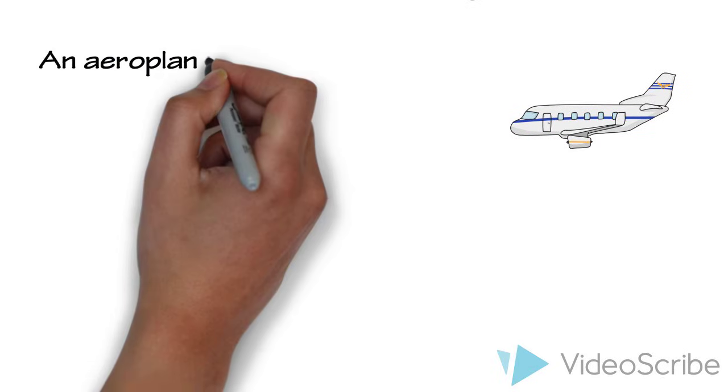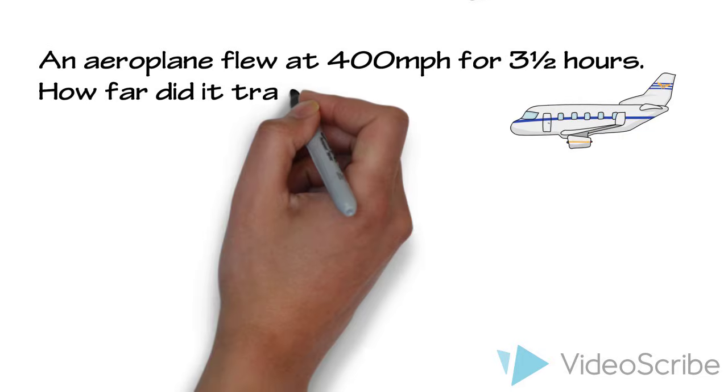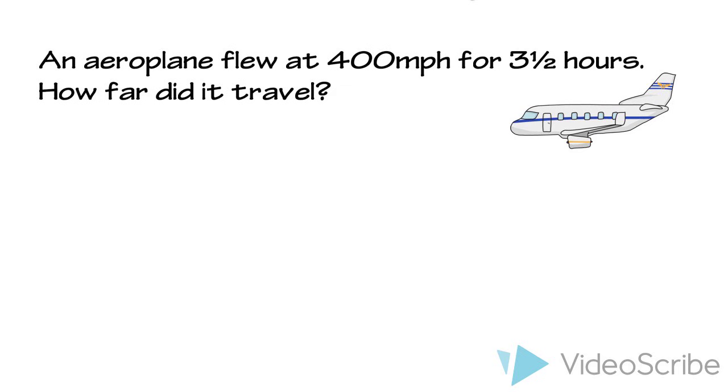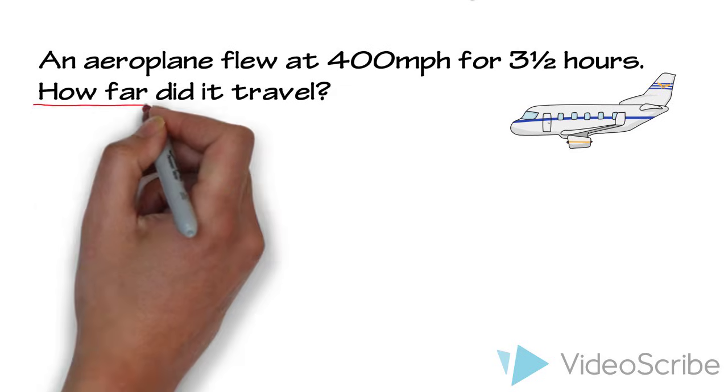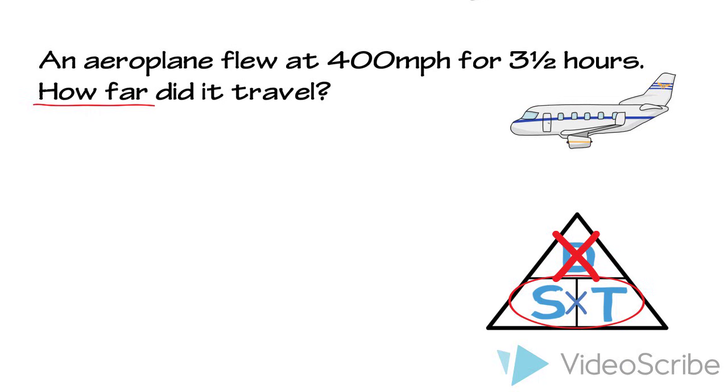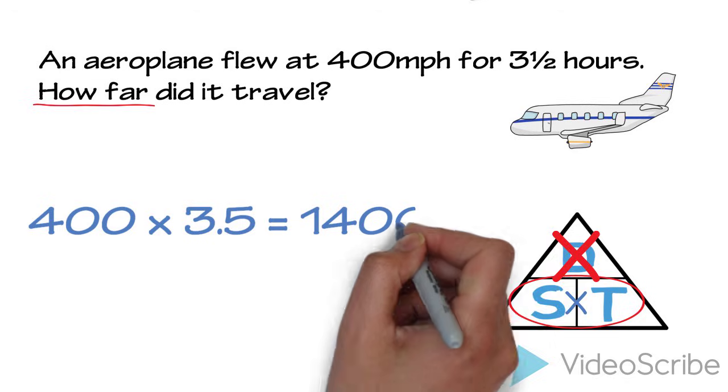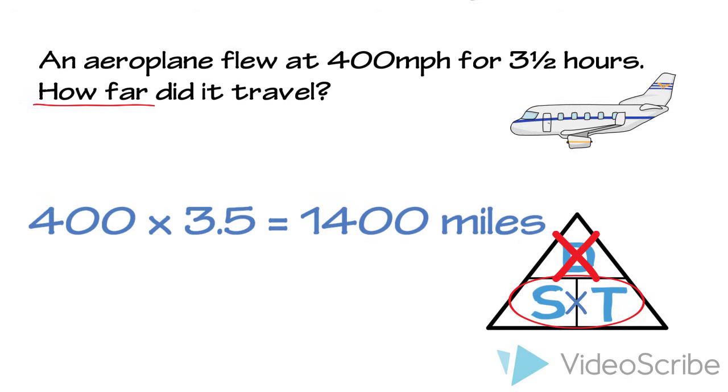Here is our next question. An aeroplane flew at 400 miles per hour for three and a half hours. How far did it travel? This time it's asking how far, so we are looking to find out the distance here. So, by covering the D, we are left with speed times time. That gives us 400 multiplied by 3.5, which equals distance travelled of 1,400 miles.